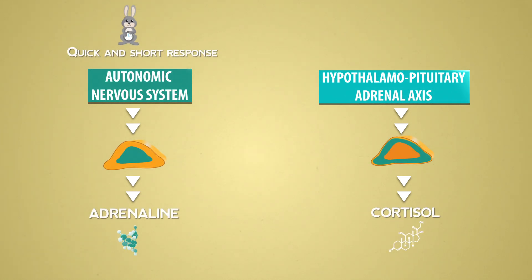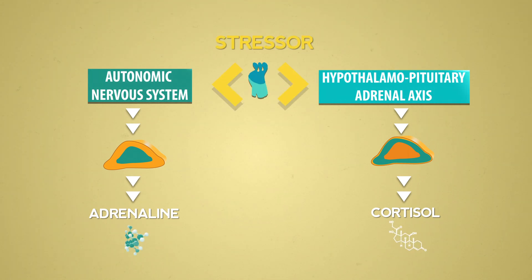The autonomic nervous system allows a quick and short response, while the HPA axis is slower and provides additional support in a delayed fashion. Moreover, these two stress pathways have different patterns of response, depending on the type of stressors.